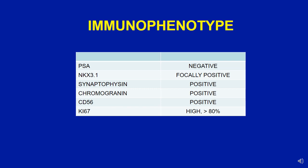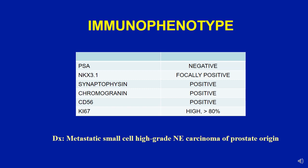The immunophenotype showed PSA was negative and NKX3.1 was focally positive. Synaptophysin, chromogranin, and CD56 were all three diffusely positive. Ki67 proliferation marker demonstrated high proliferation activity of more than 80%. So despite PSA negativity, my diagnosis for this case is metastatic small cell high grade neuroendocrine carcinoma of prostate origin.